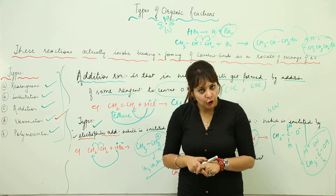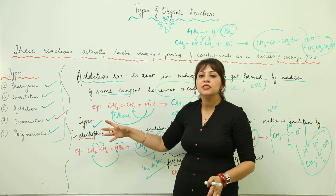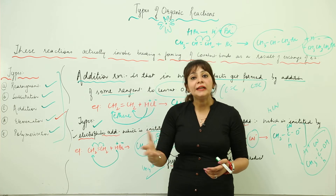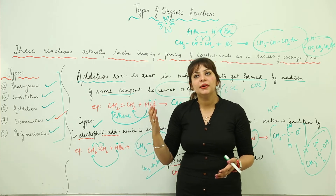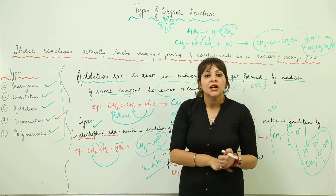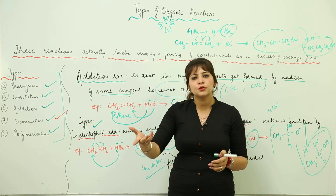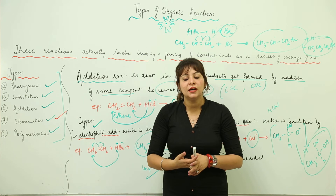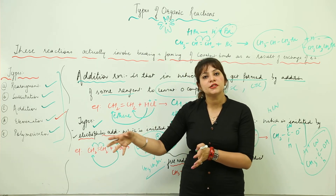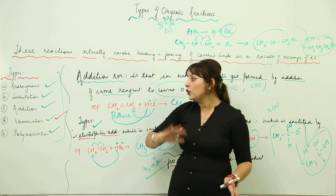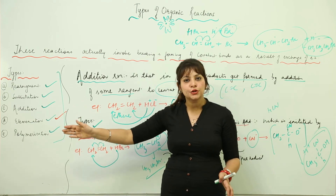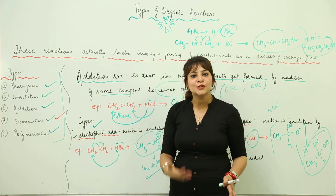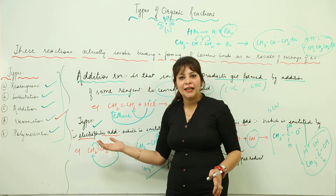These are all the common reactions which occur in case of organic compounds. You need to remember these reactions and be able to predict the type of reaction. It is very simple because you just have to consider electrophile, nucleophile, and free radical, which we already covered in the previous lecture. Once you are familiar with the type of attacking reagent, it will be a quick task to learn organic reactions.